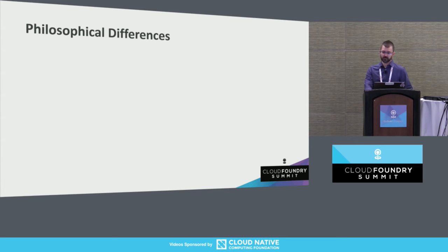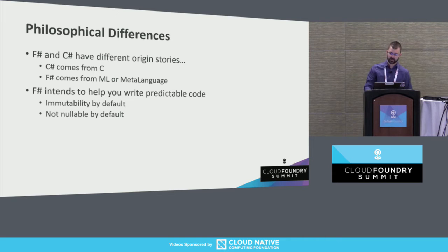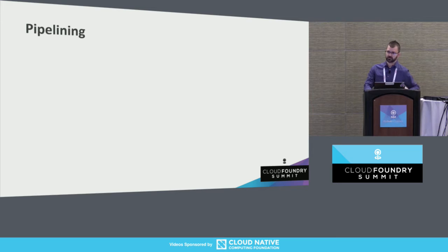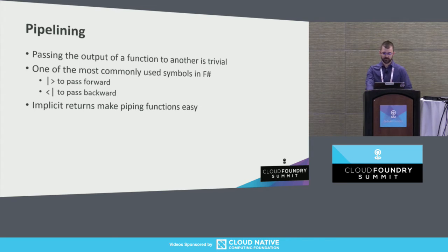C# and F# exist for different reasons. C# comes from C — no surprise there. F# comes from ML; it is effectively the .NET version of OCaml. One of the main goals of F# is to help you write predictable code, and you get that by the compiler doing more for you — immutability, nullability, and so on. Pipelining is another really neat feature. If you've used Bash or PowerShell, you just pass the output of one function to another. It is extremely easy in F#; you can pass forward or pass backwards. It's really common and one of the most popular operators for good reason.